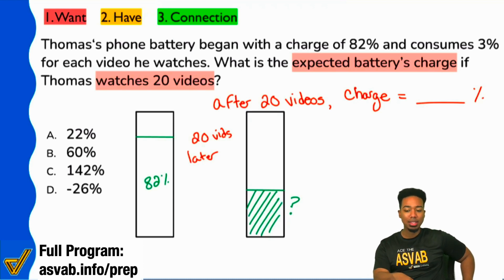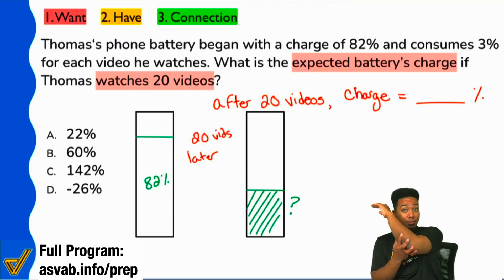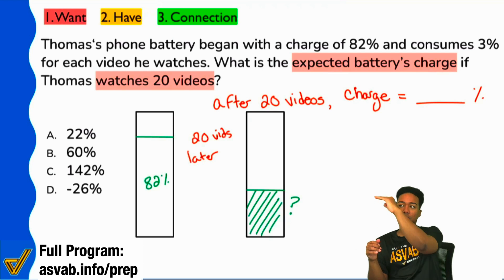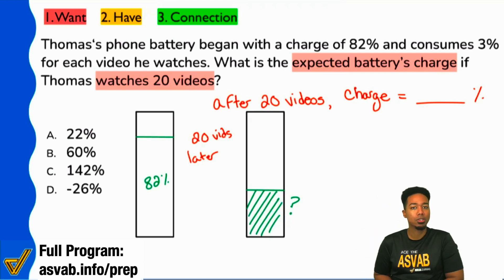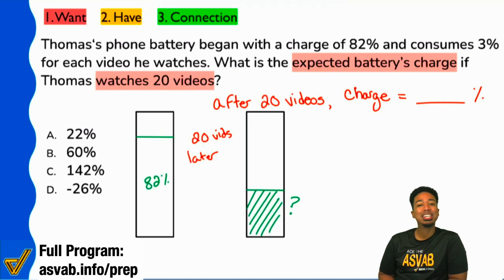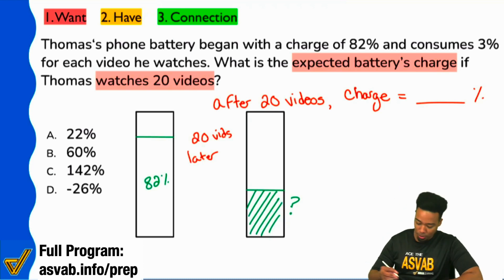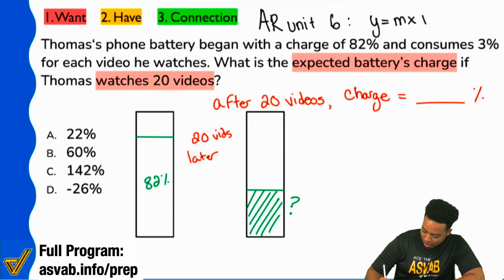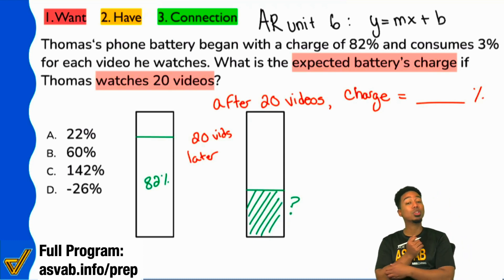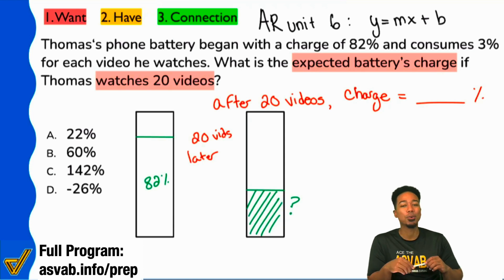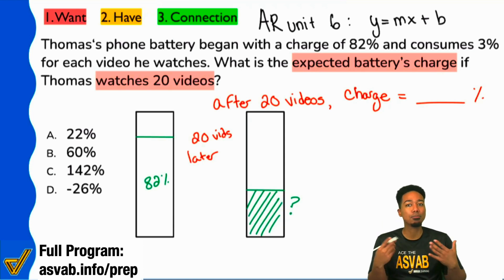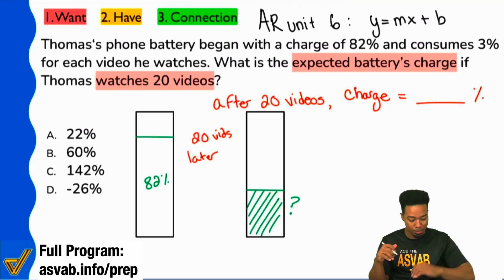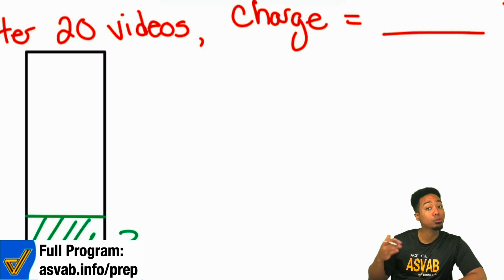What we're talking about is a mark — represented as a percentage — that goes down as we watch more videos. This is not a traditional percentage question. This is actually going to be a linear equation, found in your arithmetic reasoning course unit six. This is going to be y equals mx plus b. For those of you who called that out earlier, great job. We need to understand the pieces of the puzzle.